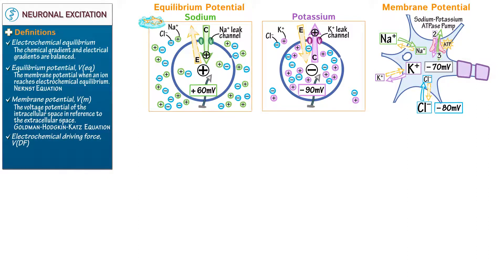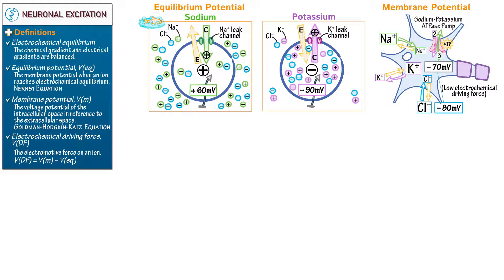Write that the electrochemical driving force is a measure of the electromotive force on an ion. To calculate driving force, subtract the equilibrium potential from the membrane potential. The greater the difference between the two potentials, the greater the driving force. Show that chloride has a low driving force because the equilibrium potential for chloride is very near to the neuronal membrane potential.